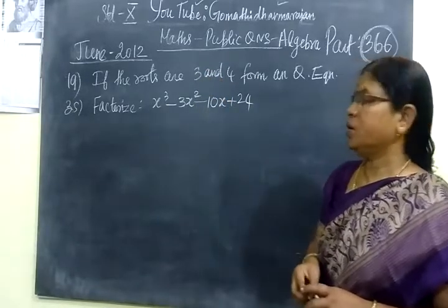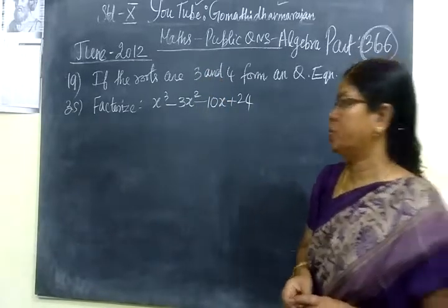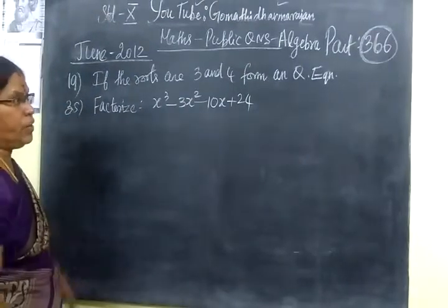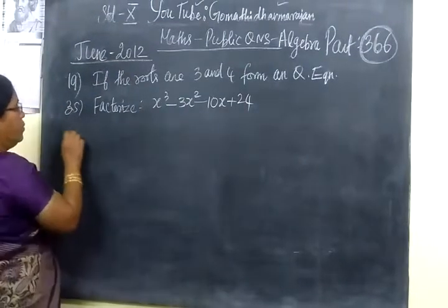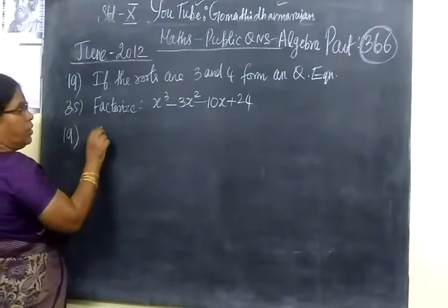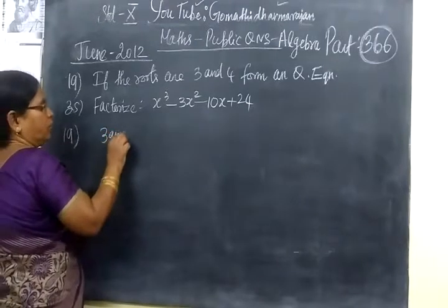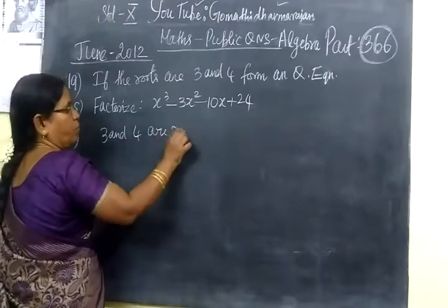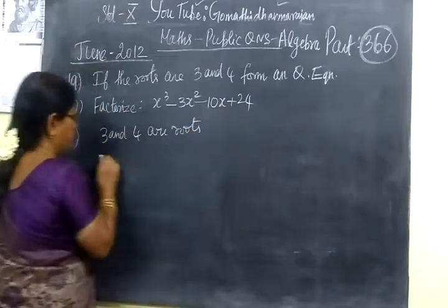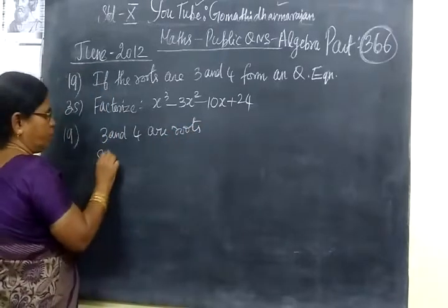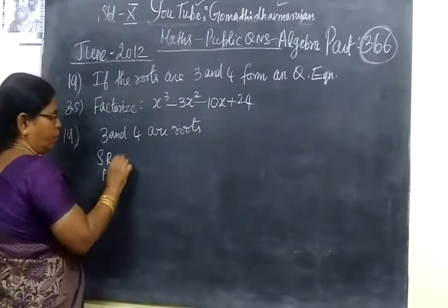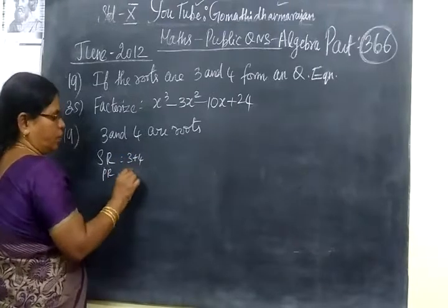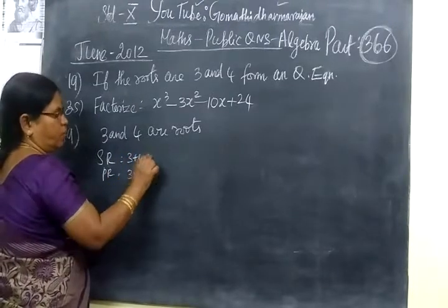Now we are going to see June 2012. This is a signed-in question — a very, very easy question. It is given that 3 and 4 are the roots. So we will get the condition of this: sum of the roots is 3 plus 4, and product of the roots is 3 into 4.